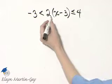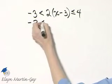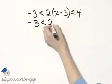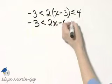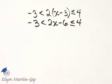Let's first remove parentheses. So I have negative 3 is less than, that would be 2x minus 2 times 3 is 6, is less than or equal to 4.